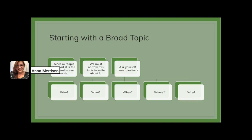We always start with a broad general topic and then we narrow it down. In order to narrow it down, we put on our journalism hat and we ask ourselves these questions: Who, what, when, where, and why? This will help us to narrow our topic.